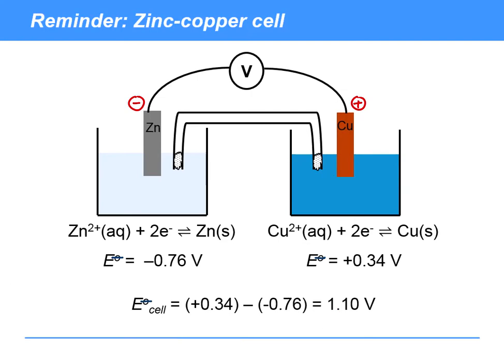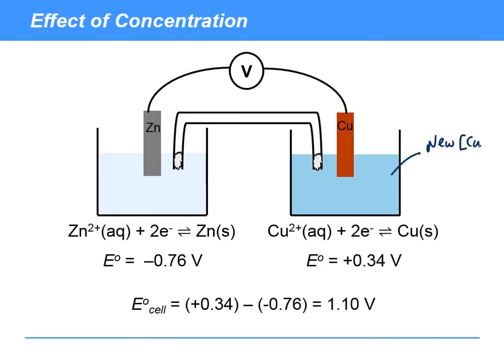Now what we're going to do is make a change. Rather than using the standard conditions here, so standard concentration of copper 2 plus was 1 mole per decimetre cubed, we're now going to instead use a new concentration of copper 2 plus of 0.1 moles per decimetre cubed. So how is this going to affect the value of the cell potential?